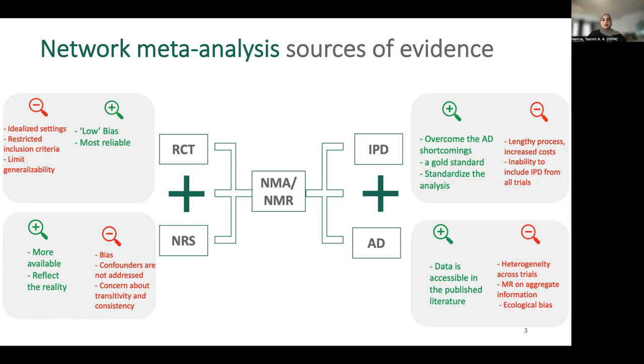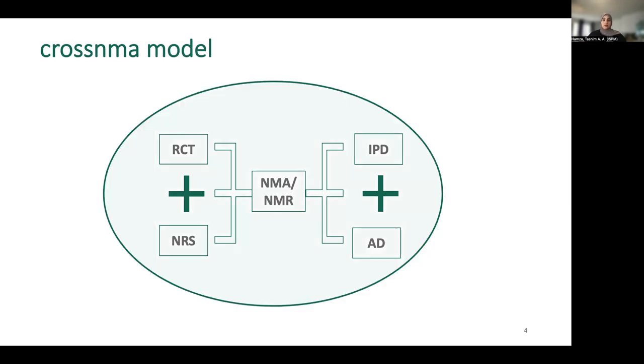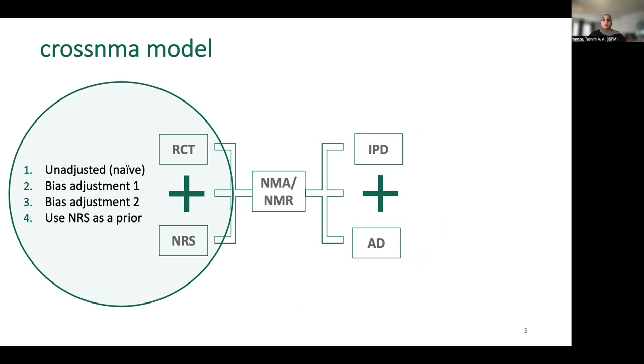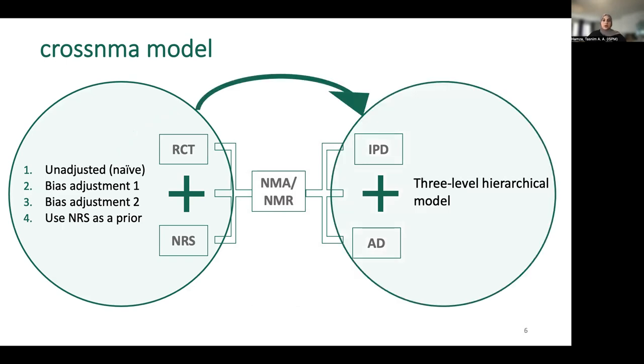We might need in some situations to combine these types of evidence while taking into account the biases on each design. And this is what the CROSS NMA model is doing. It's a recent extension of the NMA model to synthesize a mixture of data formats, IPD and aggregate data, and different study designs. We build the CROSS NMA model by integrating four different approaches which combine clinical and observational data into the three-level hierarchical model that synthesizes IPD and aggregate data.